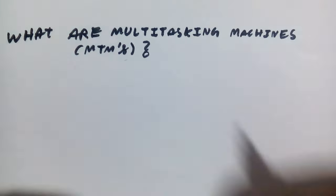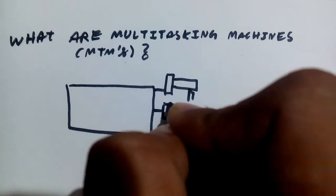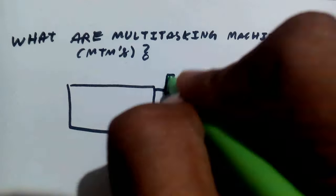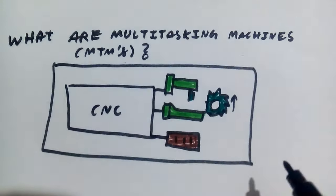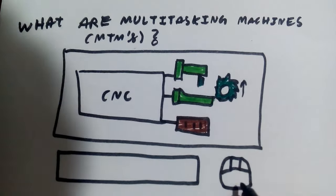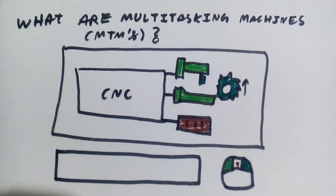Also, it's time to answer our last episode's question. What are MTMs? MTMs or multitasking machines are CNC machines with many axes that combine turning, milling, grinding and material handling into one highly automated machine tool.